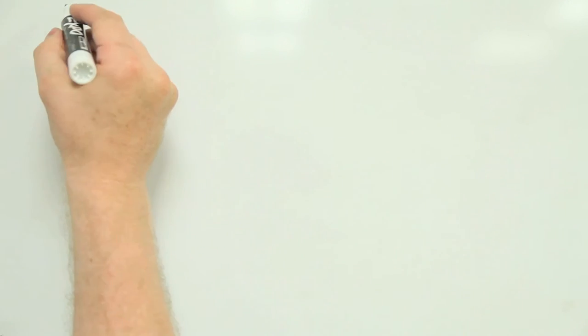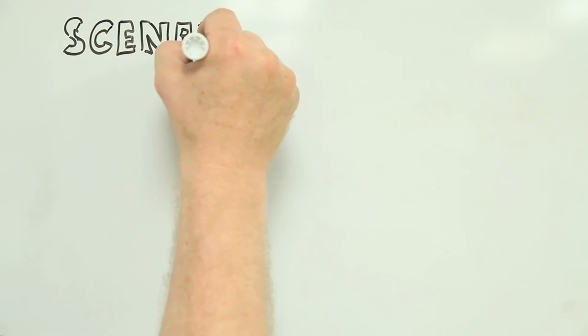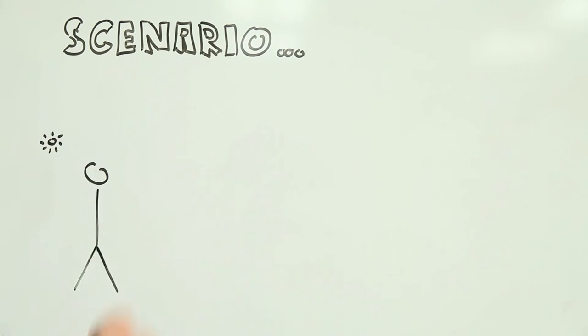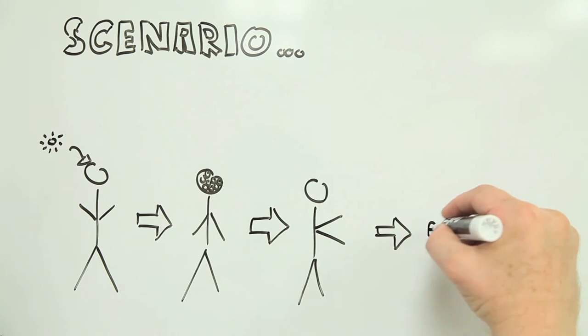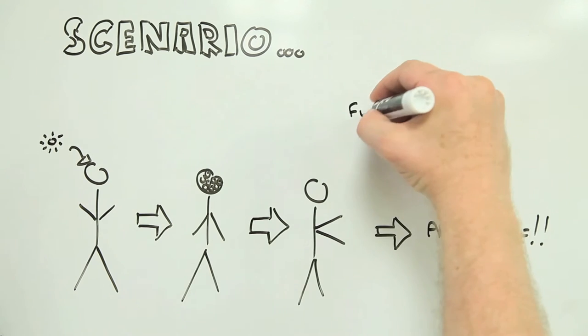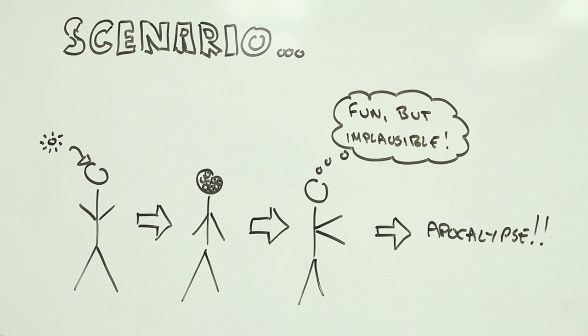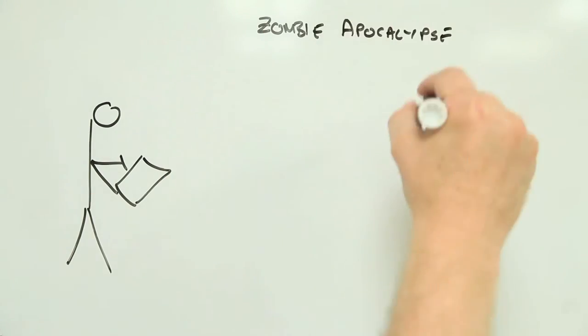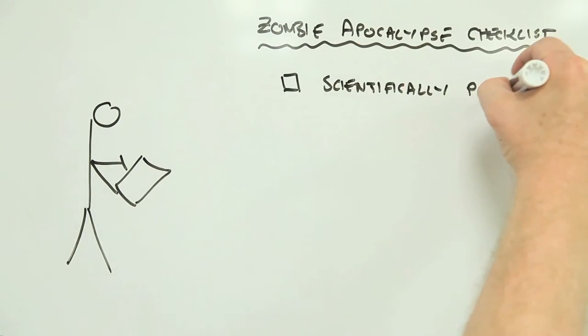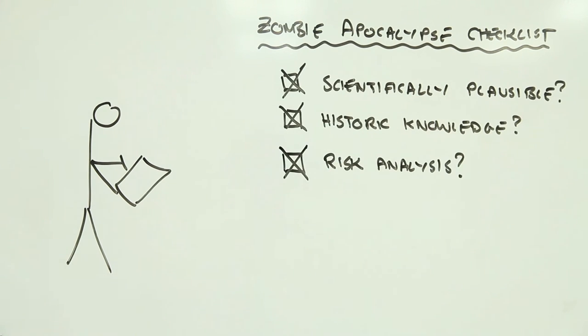One approach is to assume the worst. Maybe that novel, never-before-seen nanoparticle could burrow into your brain, replicate itself, and bring about the next zombie apocalypse. Maybe it could, but probably it won't. Fortunately, a firm grasp of scientific reality, past experience, and some risk analysis know-how go a long way to helping predict the likely ways a new material might be harmful, and how that harm can be avoided.